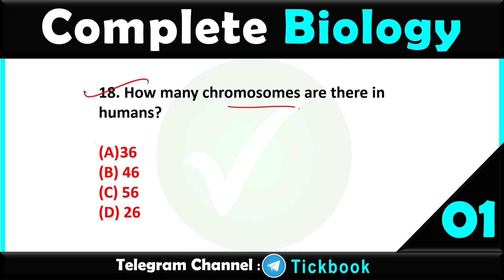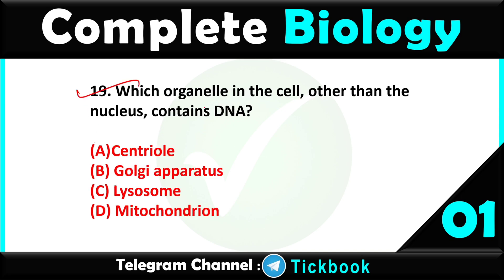Question number eighteen: how many chromosomes are there in humans — option number B, 46. Question nineteen: which organelle in the cell other than the nucleus contains DNA — option number D, mitochondrion, is the right answer.